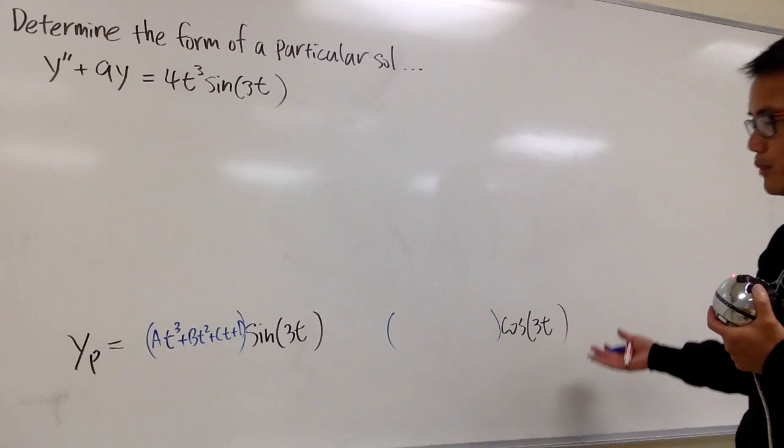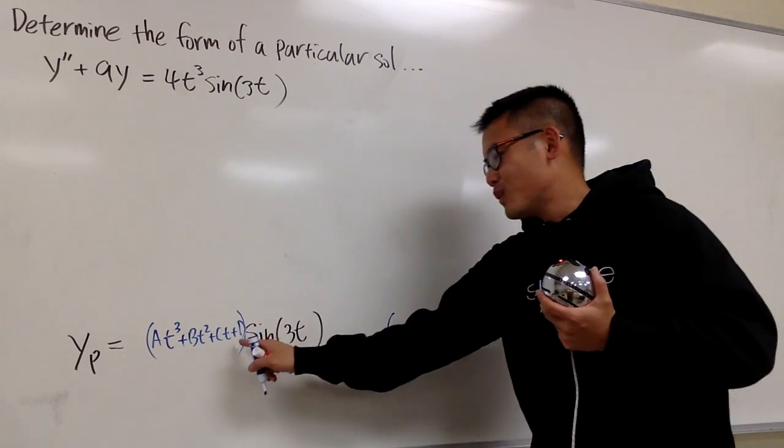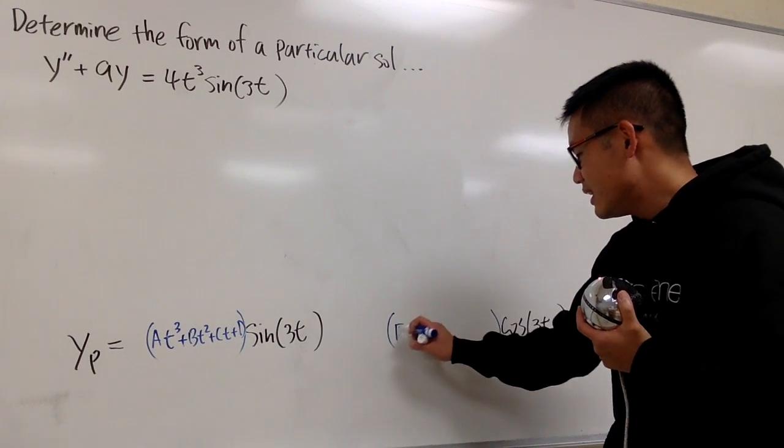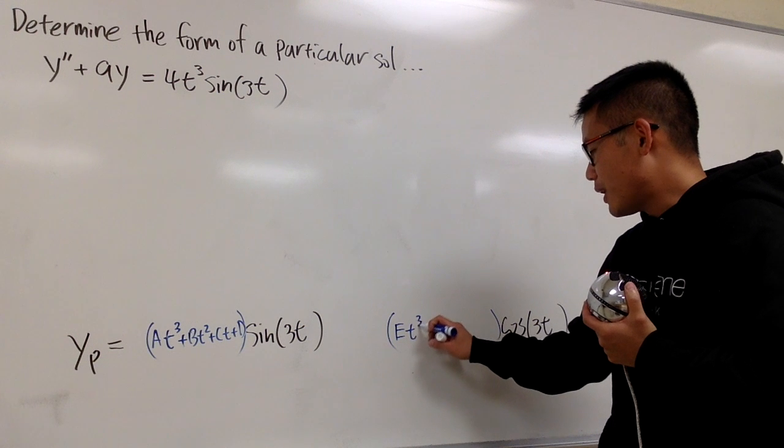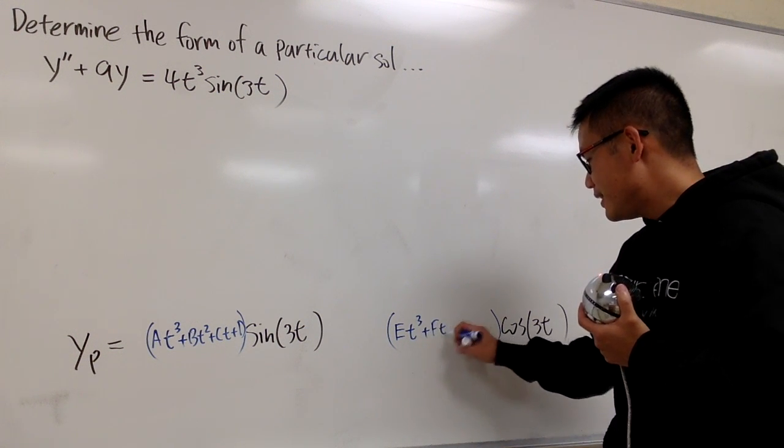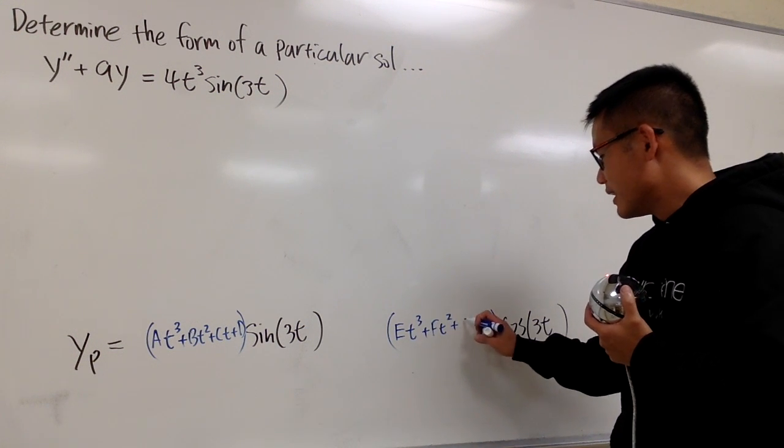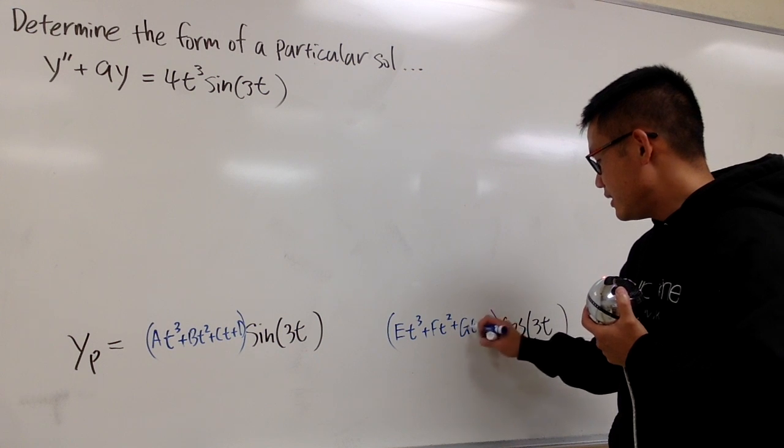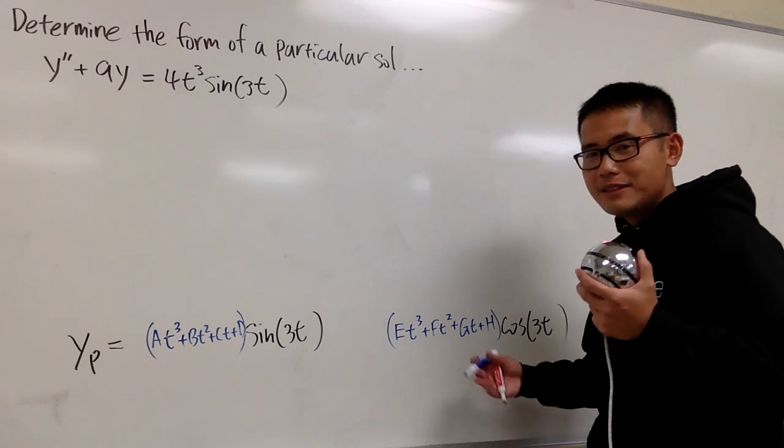And right here, we pretty much do the same thing. And I end up with d right here. So I put down e, and then t to the third power, and then f, t to the second power, plus g, t, and then plus h, and no power.